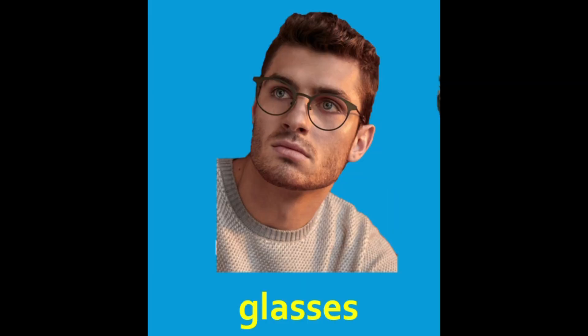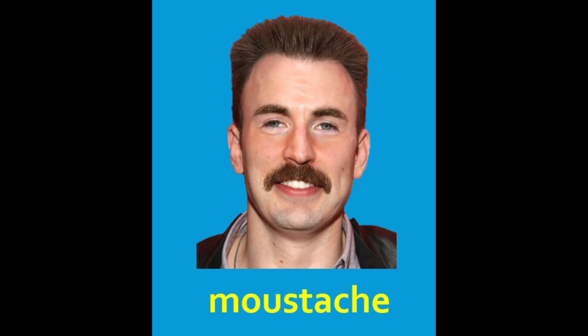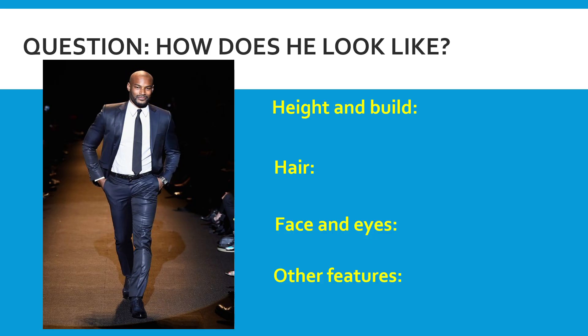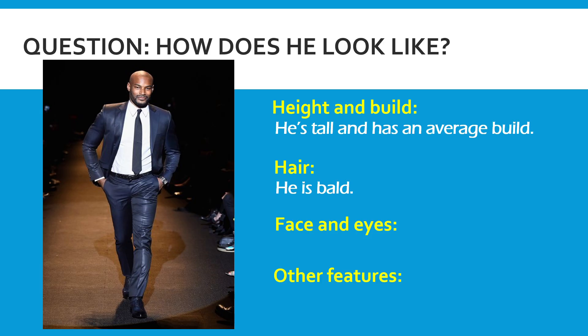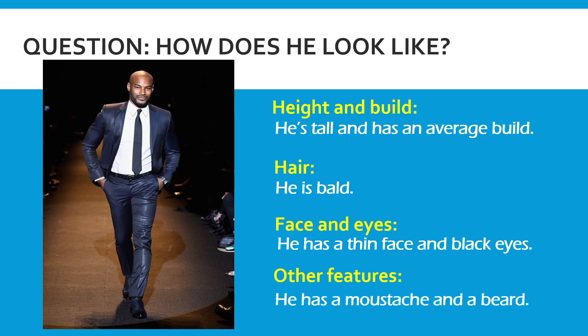Other features include glasses, beard, sunglasses, and mustache. Now, looking at a sample photo: the person is tall with an average build. He is bald, has black eyes, and a thin face because his jawline points toward his chin. He also has a mustache and a beard.